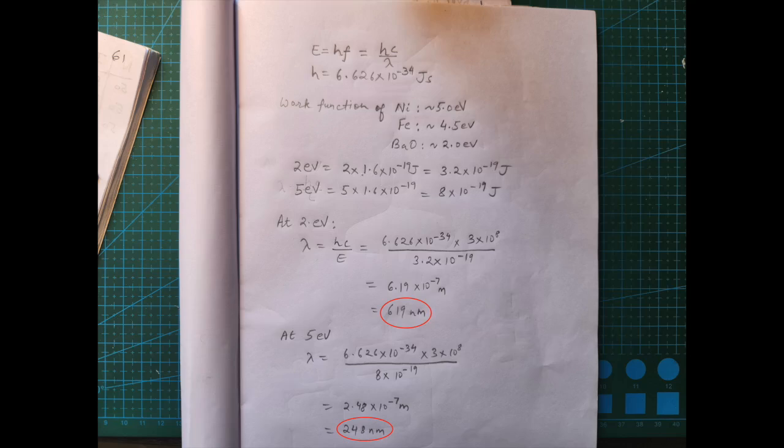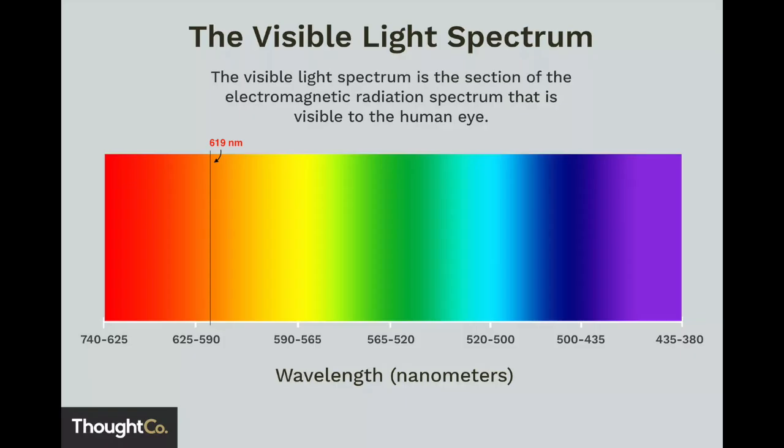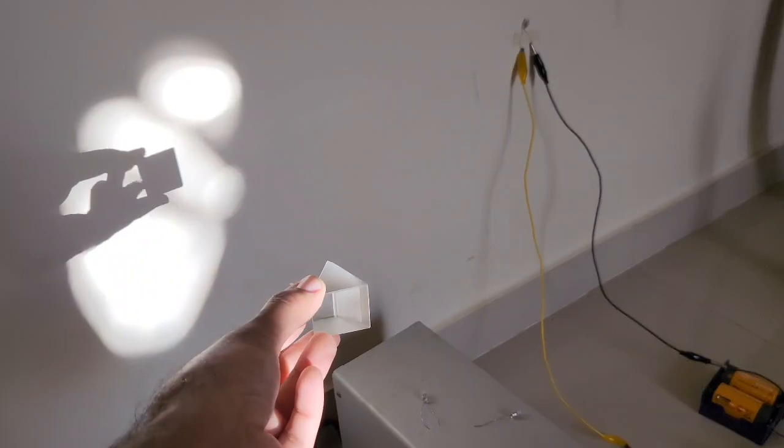Based on my calculations, a wavelength of 619 nanometers would liberate electrons from barium oxide, and 248 nanometers is enough for nickel.